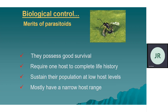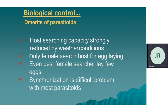Merits of parasitoids: they possess good survival, require one host to complete life history, and sustain their population at low host levels — even if fewer hosts are present, they still survive. Their host range is narrow. Demerits: host-searching capacity is strongly reduced by weather conditions. Only females search for the host for egg laying. Even the best females lay few eggs — these are the limitations.